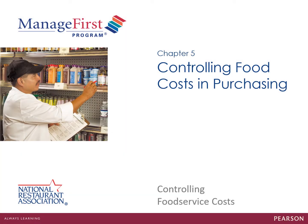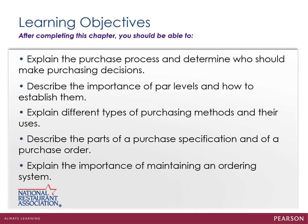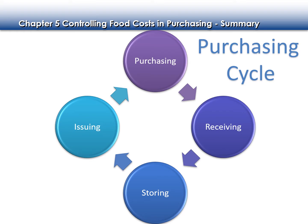We are going to talk about the different purchasing cycle and how we can control cost in each stage of that cycle. First we understand what the purchasing cycle is. We start with our purchasing stage, then move on to receiving where we actually receive the product, we store it, we put it into inventory, and then once we issue it, it becomes part of our food cost. The cost of doing business — while it's still in our storage, it's not part of our food cost. We still paid for the product, but it's not part of our food cost. In a later chapter we will talk about how we calculate our actual food cost.